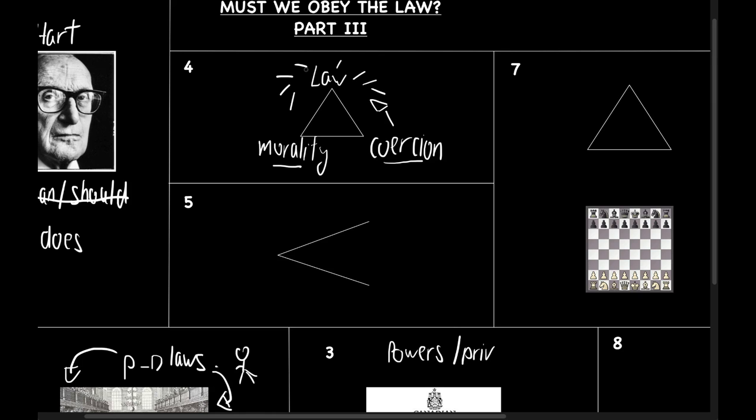Since law serves so many roles, Hart believes Austin is mistaken in suggesting that obedience is the foundation of a legal system. To Hart, it's more a matter of acceptance.